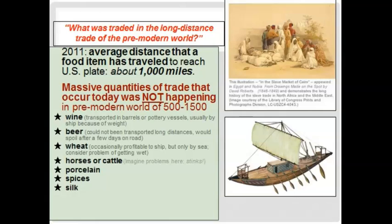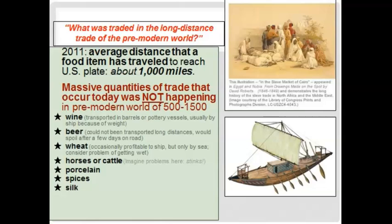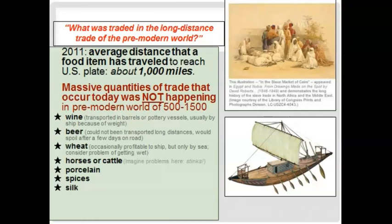What was traded in the long-distance trade of the pre-modern world? In 2011, the average distance a food item traveled was about 1,000 miles to get to your plate — showing how important trade is even today. It was paramount to people's lives 1,500 to 2,000 years ago as well. What we don't have back then is the massive quantities of trade we have today, so it's the beginning of globalization, but still not on the scale of what we have today.